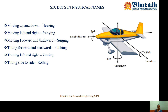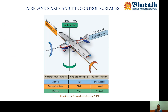As far as aircraft are concerned, we represent the three translational and rotational motions in nautical terminologies. When an aircraft moves up and down, that is called heaving. Moving right and left is swaying. Moving front and back is surging. Tilting forward and backward is pitching. Turning left or right is yawing. And tilting to the left or right side is rolling. These are the 6 degrees of freedom in nautical terminology for an aircraft.